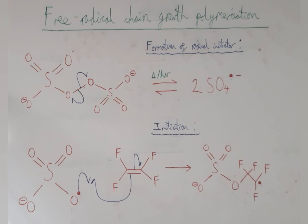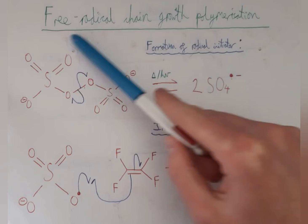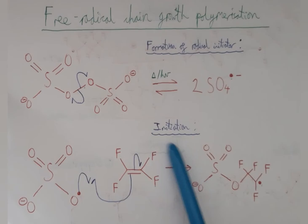Chain growth polymerization can be achieved through several methods. In this video, we will focus on free radical chain growth polymerization, but there are also other ways, for example anionic and cationic chain growth polymerization. This involves an initiator, a substance which basically kickstarts the polymerization. But first, we need to form the activated initiator.